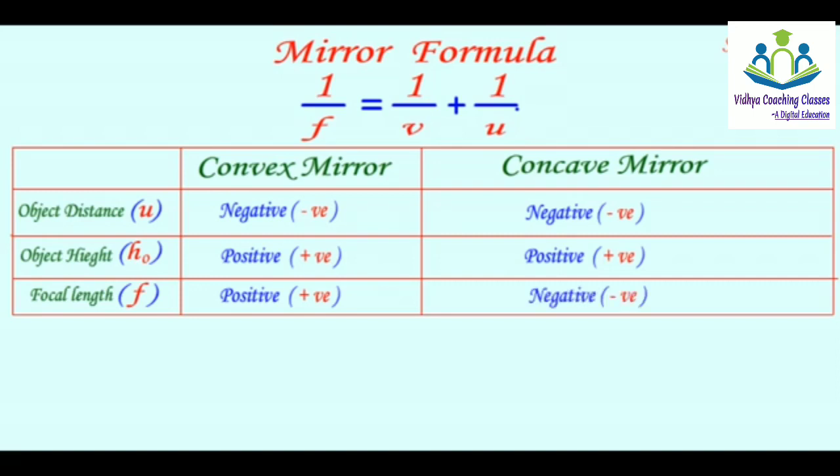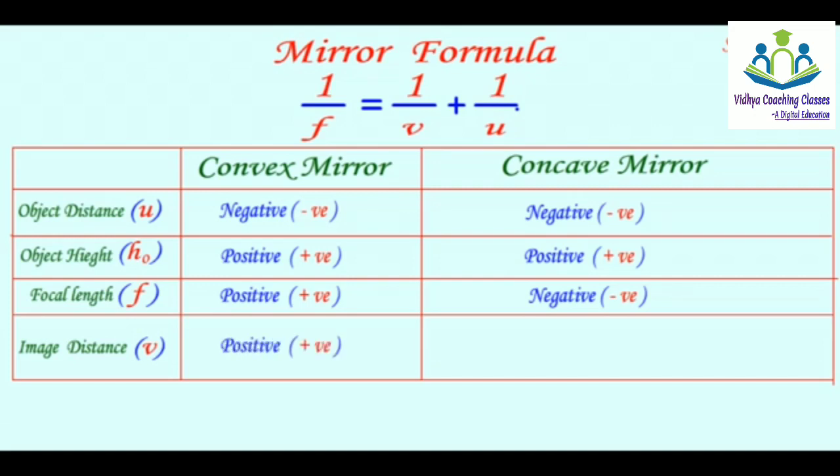Focal length: convex mirror positive and concave mirror will be negative. Next one is image distance, which we denote V. V will be positive in convex mirror.